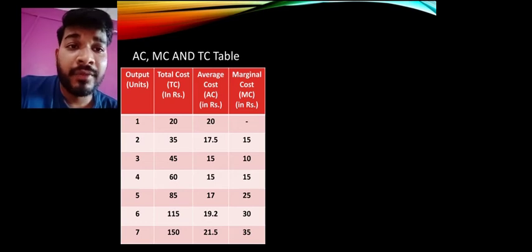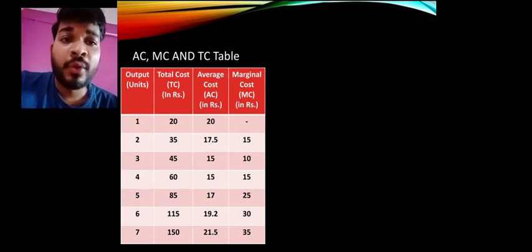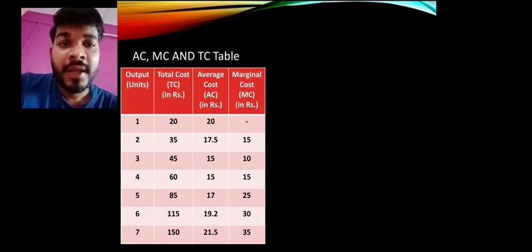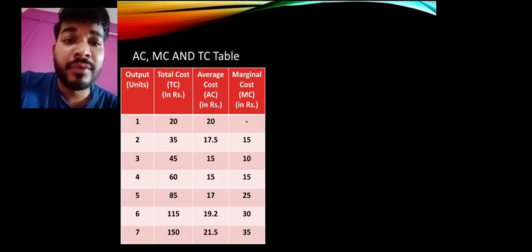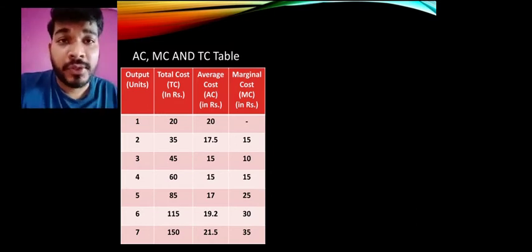In the examination, you need to know both the average cost and marginal cost formulas. Let me show you how to calculate the average cost column. For 1 unit: 20 ÷ 1 = 20. For 2 units: 35 ÷ 2 = 17.5. For 3 units: 45 ÷ 3 = 15. For 4 units: 60 ÷ 4 = 15. For 5 units: 85 ÷ 5 = 17. For 6 units: 115 ÷ 6 = 19.2. For 7 units: 150 ÷ 7 = 21.5. So the average cost column is ready.